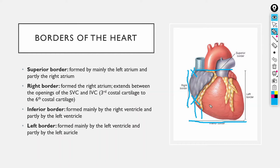The inferior border is formed mostly by the right ventricle with a small portion from the left ventricle, and it curves along the bottom. The left border is formed mainly by the left ventricle with a small portion at the top formed by part of the left atrium called the left auricle.